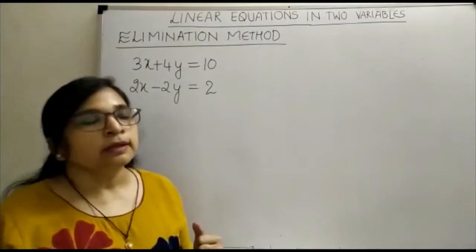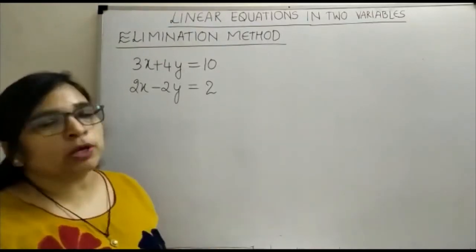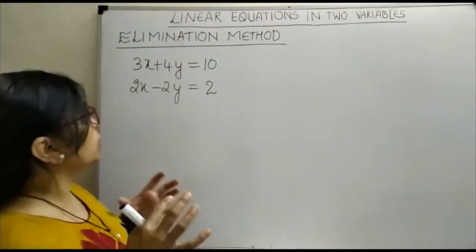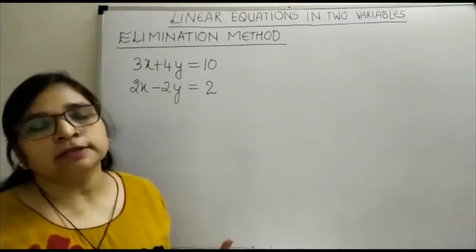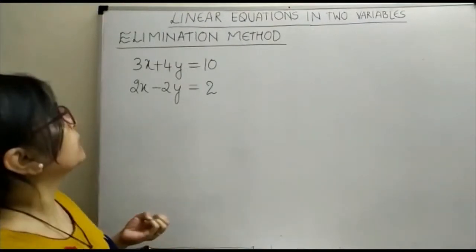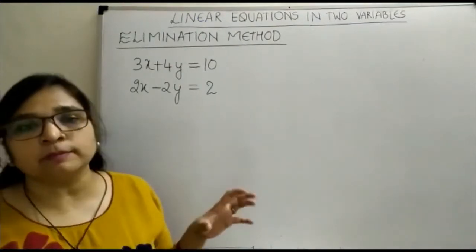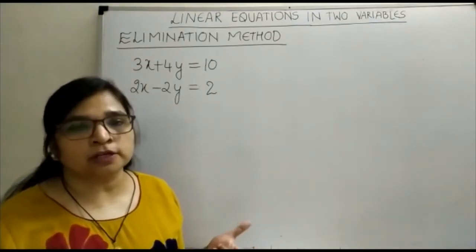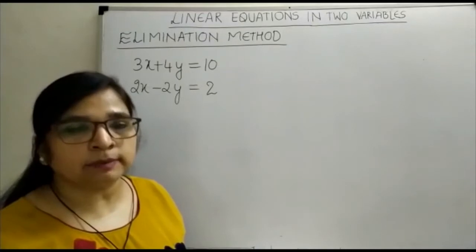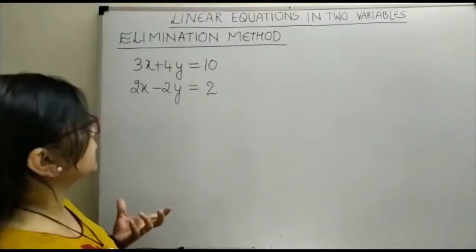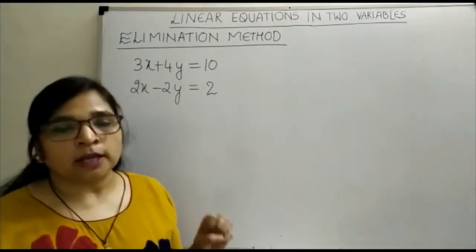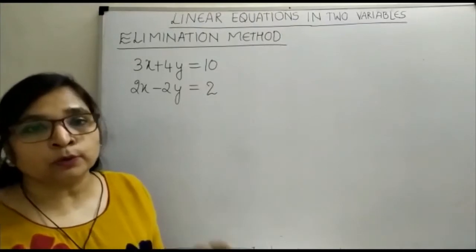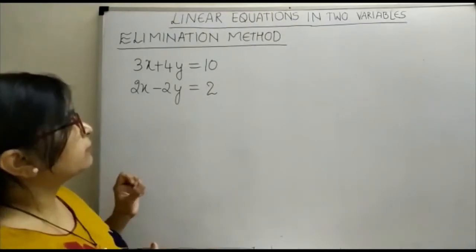Hello everyone, today in chapter 3 linear equations in two variables, we are going to discuss another type which is also known as algebraic method, that is elimination method. As you all know there are three different types in algebraic method: substitution, elimination and cross multiplication. All these three types are valid for only unique solution.